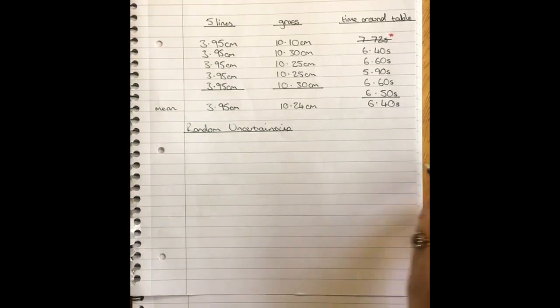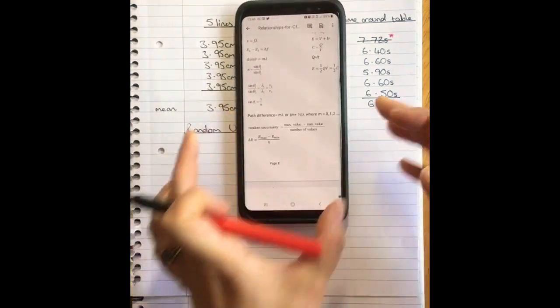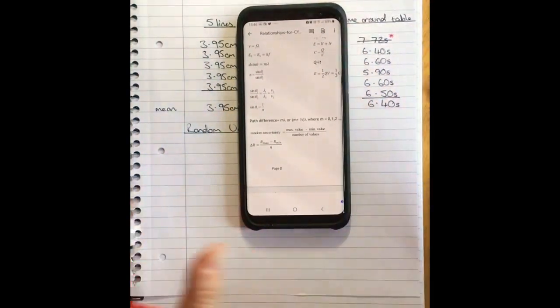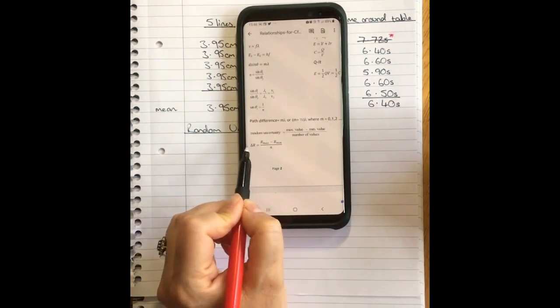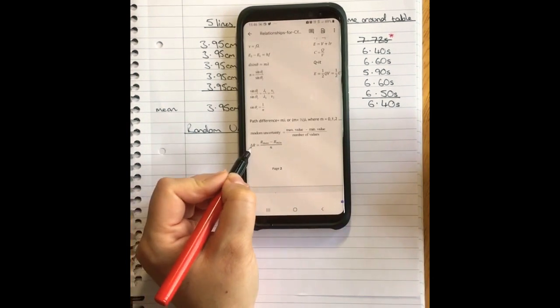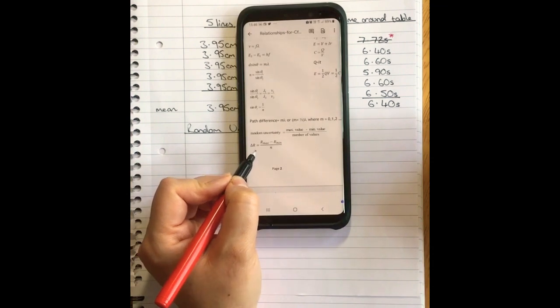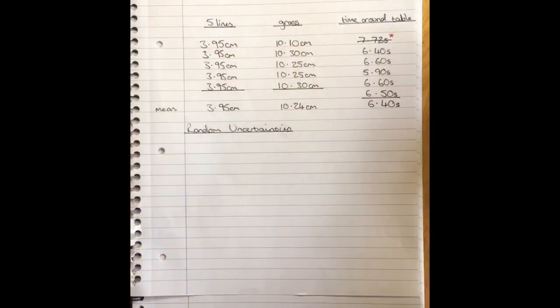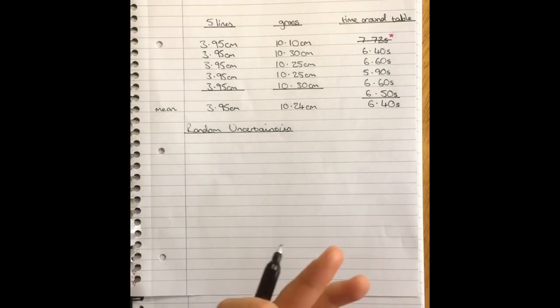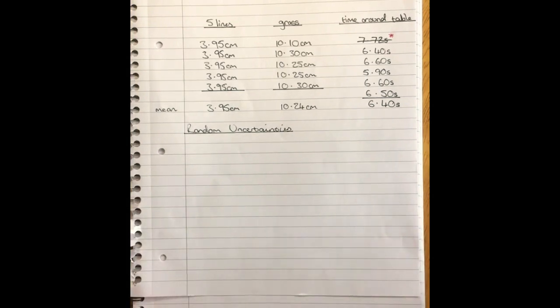So in the formula sheet, the random uncertainty formula is given in two ways. It's given in words and in letters and you'll notice again they're using delta R for delta random as well. So delta R can be reading uncertainty or random uncertainty. In advanced higher we've also in the past used delta U as random uncertainty. I'm not sure why that's been the letter, I'm sure somebody else knows. But we can use delta R all the way through higher so there's no need to get confused.